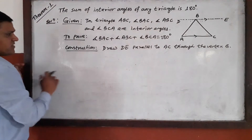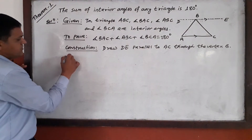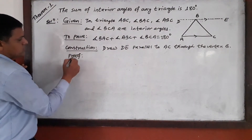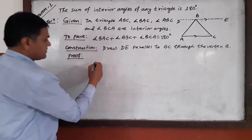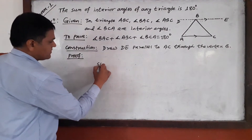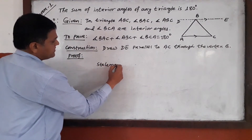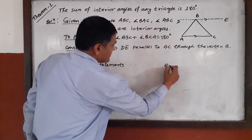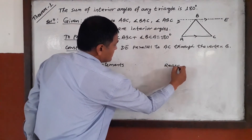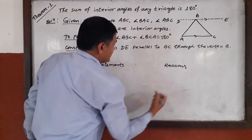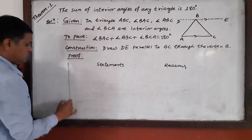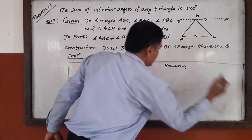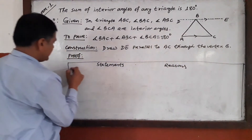After construction, the next step is proof. The proof contains statements and reasons in a table. We make a table for statements and reasons.